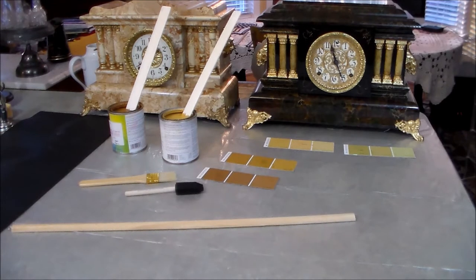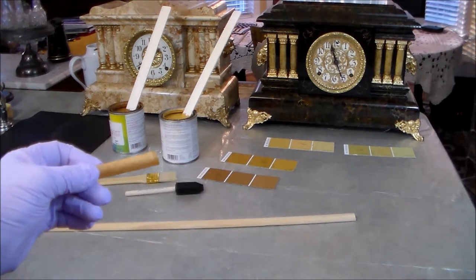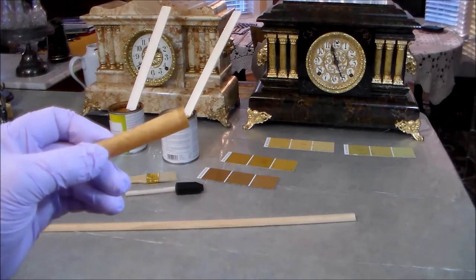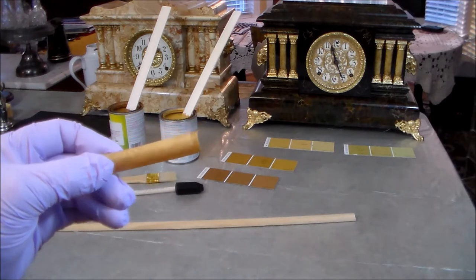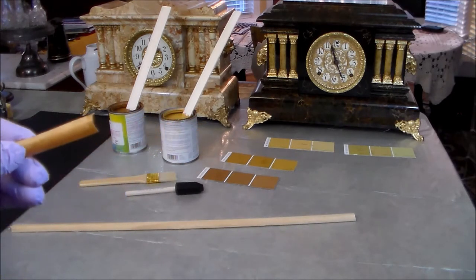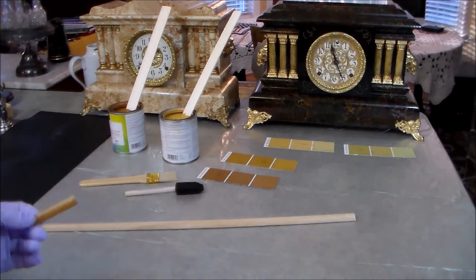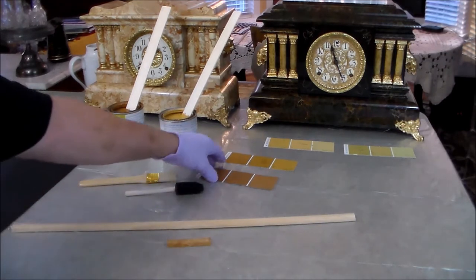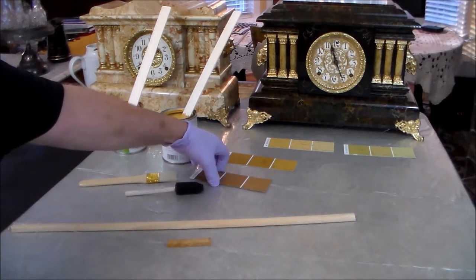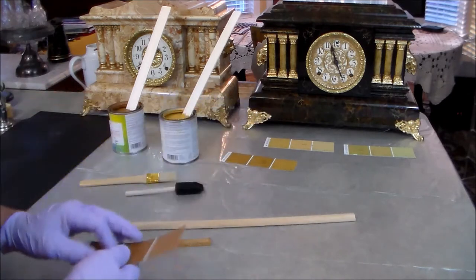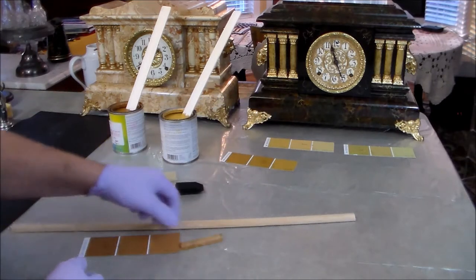And where we start actually is the hardware store. We take our missing column and we see the approximate color that it is. So we go and we find some paint swatches that come close to matching the base color. Usually these are two colors.